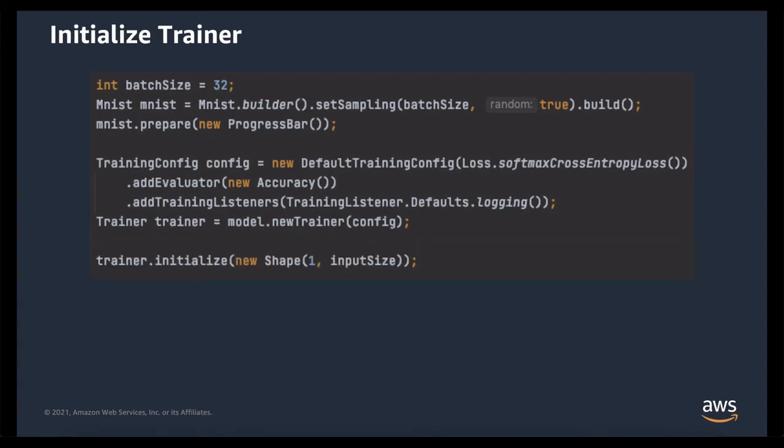Once we have our trainer, we can use it to initialize our model. During initialization, all of the parameters in our model are set at random initial values from which they can then be improved on during the training process. We can initialize it with one as our batch size, which does slightly speed up initialization. Otherwise, we should initialize it with the same shapes as our dataset is going to be producing as inputs.